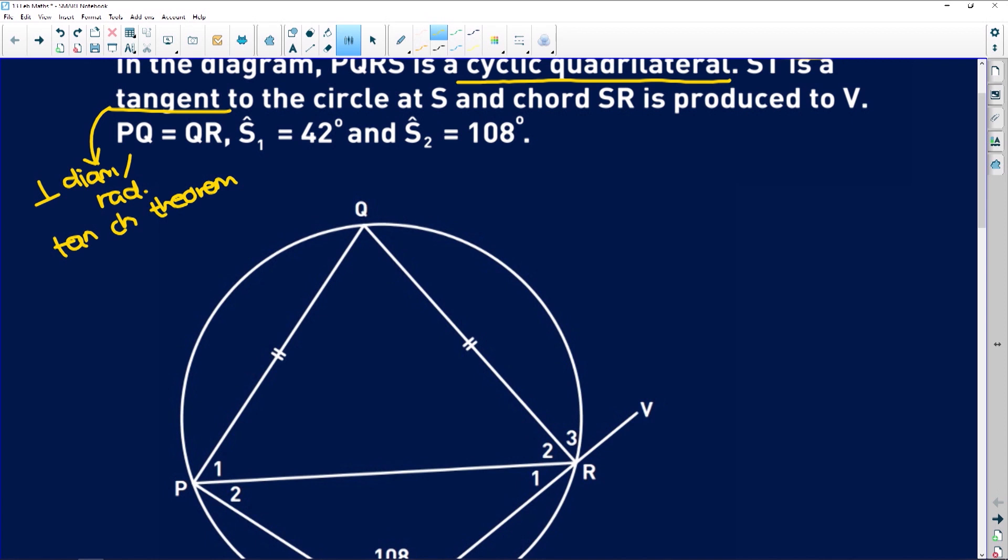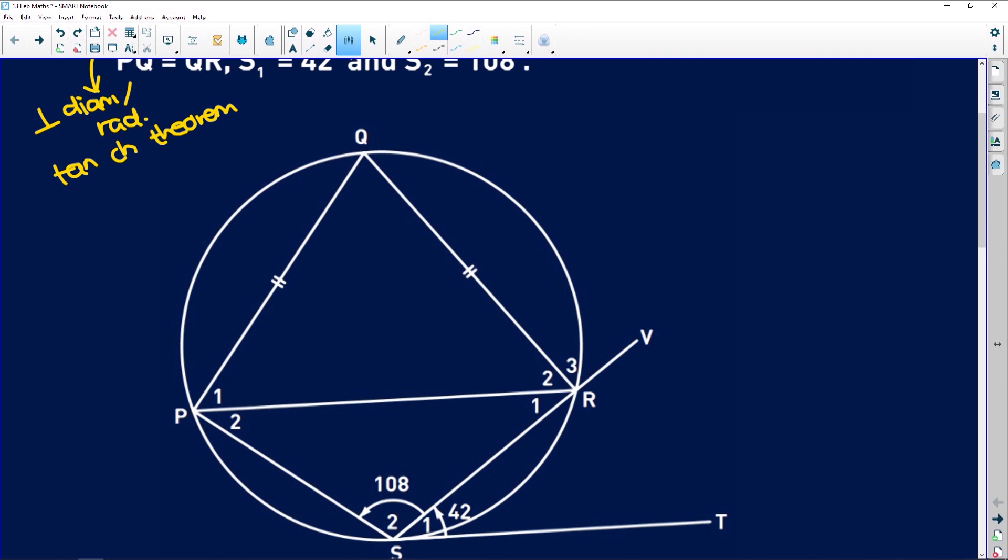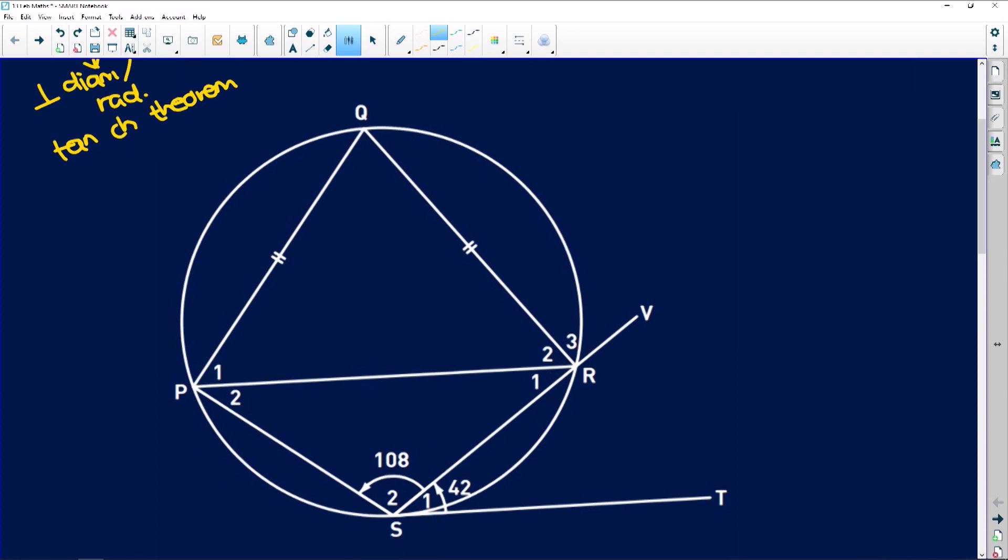So, lastly, it says chord SR is produced to V. That just means that this is all a straight line SRV. And they give that sides PQ is equal to QR, which is indicated on our diagram. S1 is 42 degrees and S2 is 108 degrees. Okay.